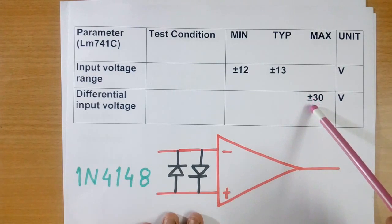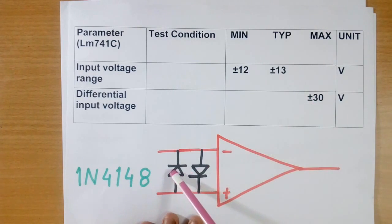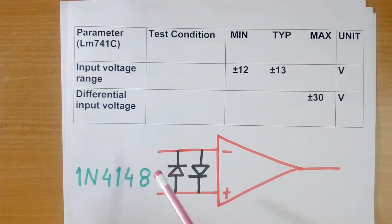To protect the IC, we connect 2 anti-parallel diodes across positive terminal and negative terminal. The diode used by me in my circuit is 1N4148. This anti-parallel diode keeps limited voltage across minus and plus terminal, and so IC does not fail.